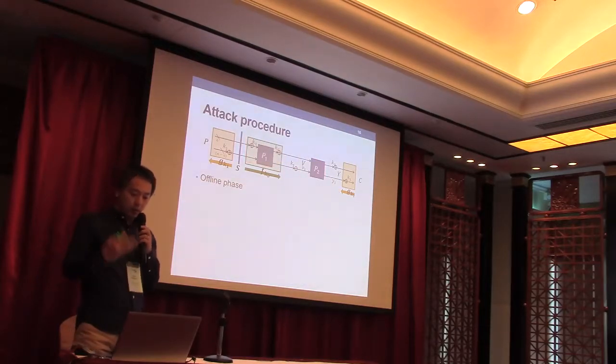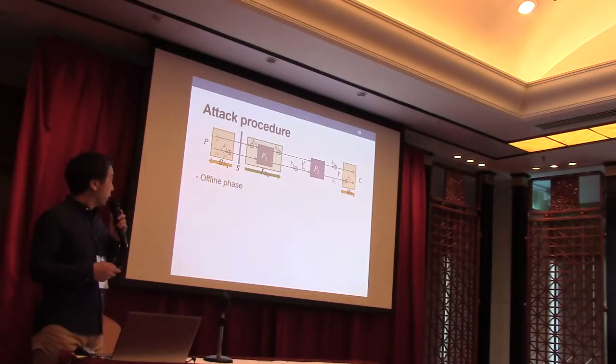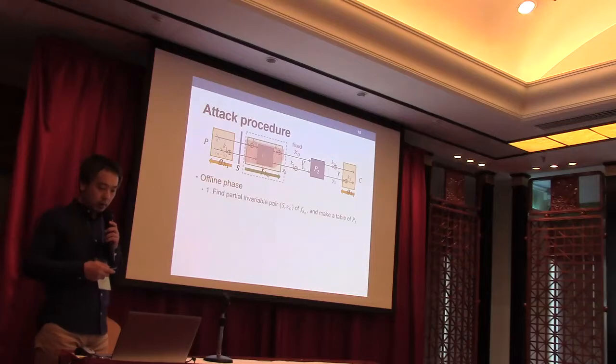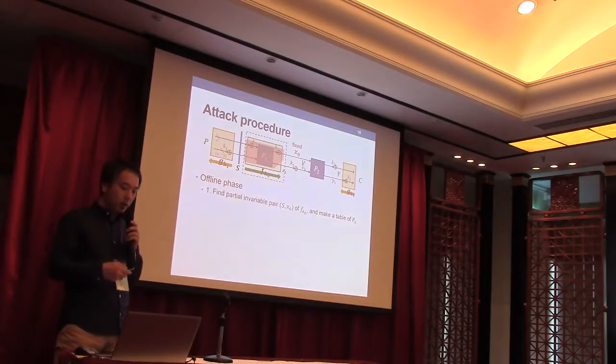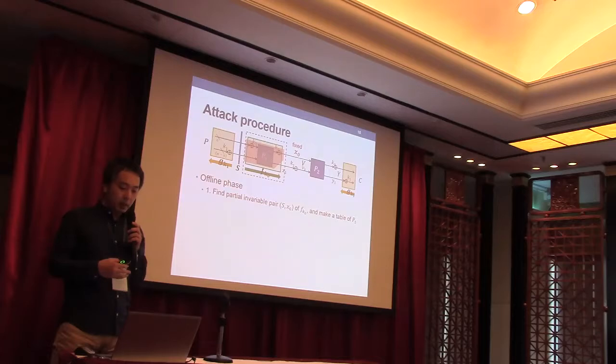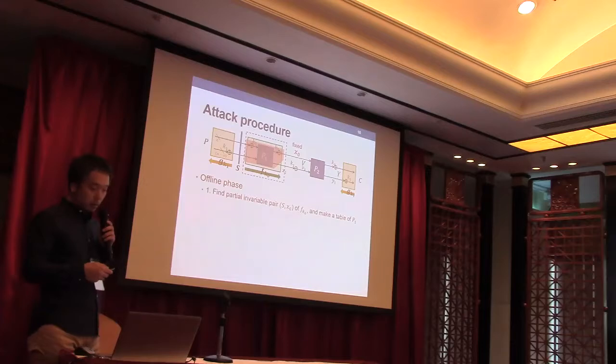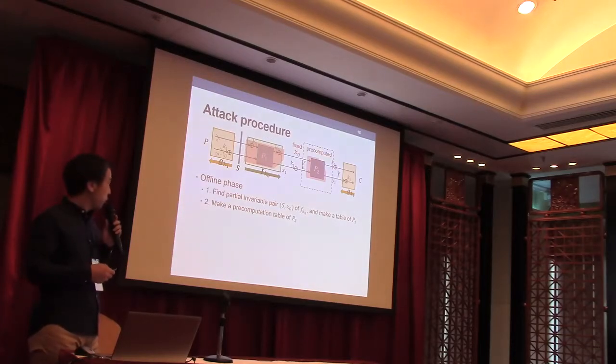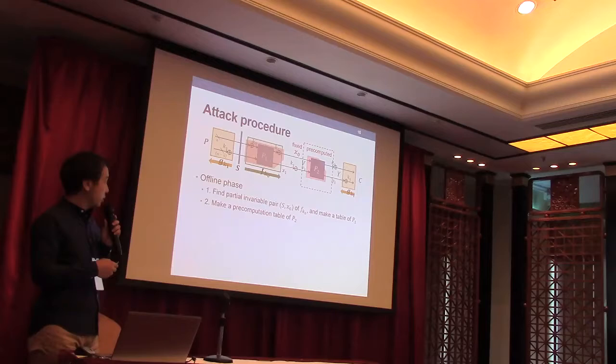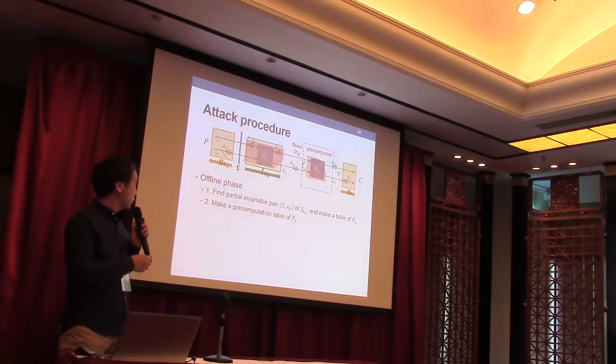So let me introduce our basic attack in detail. In the offline phase, first we find the partial invariable pair of S and X0 of F_K0, and make a precomputation table of P1. Then we make a precomputation table of P2 by using the fixed X0.